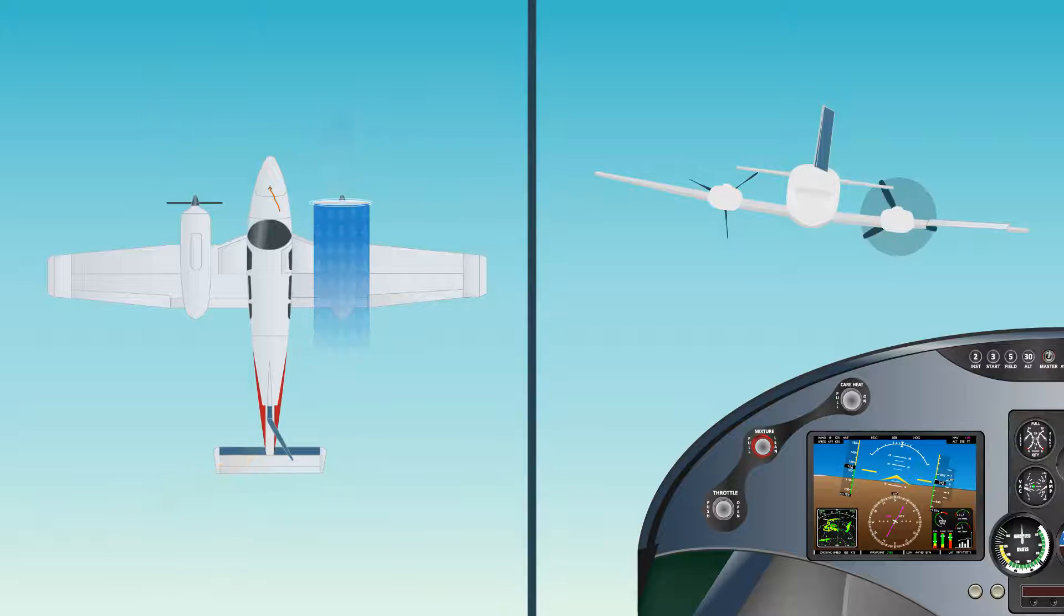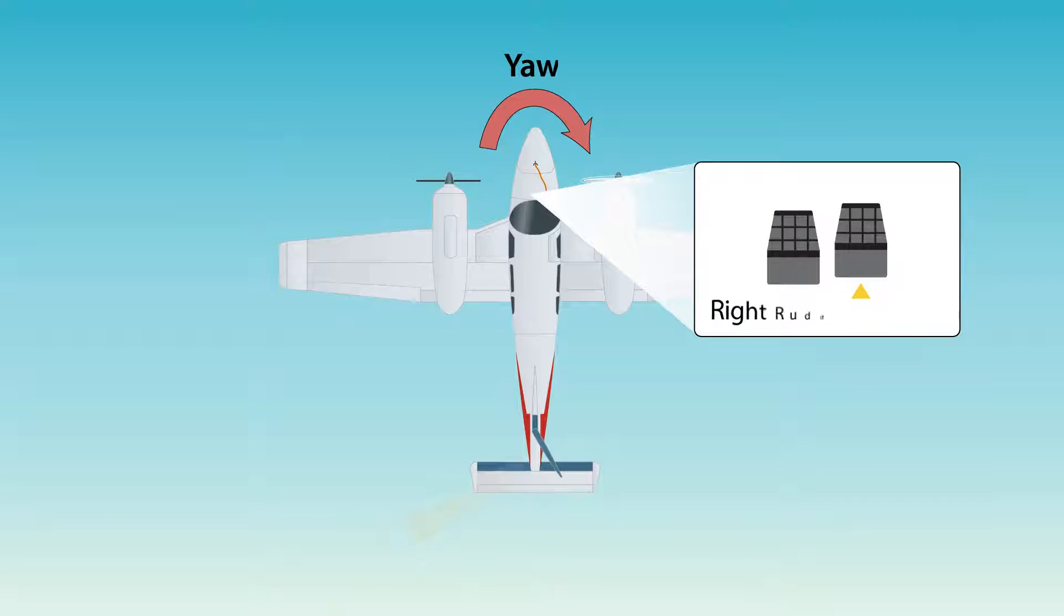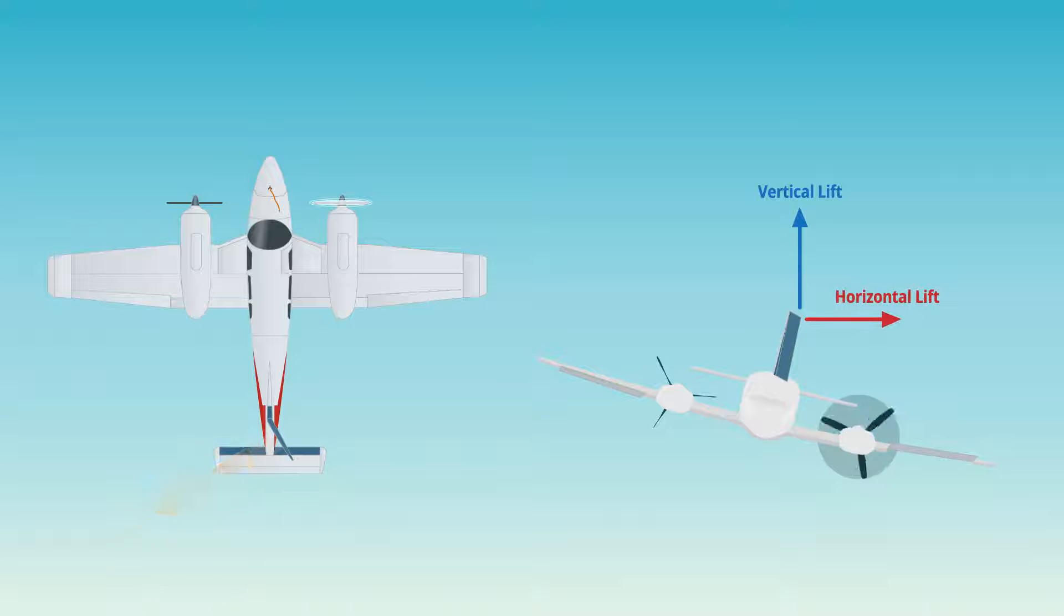To counteract asymmetric thrust during an engine failure, two control inputs are used. The first is yaw from the rudder, and second, horizontal component of lift, which is the result from bank using the ailerons.